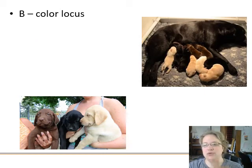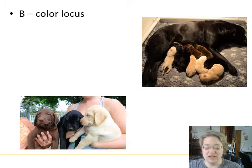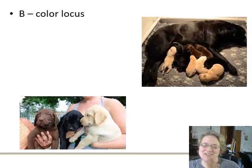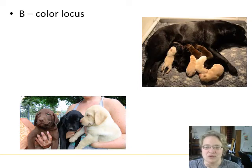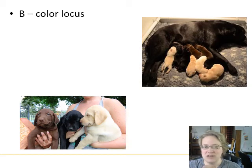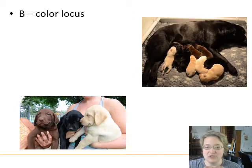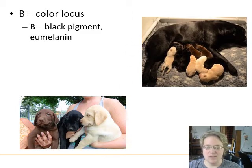Now we're going to get into a particular example we'll use a lot for homework and assignments — we're going to talk about Labrador dogs, because dogs are awesome and cute and we get to look at pictures of puppies. Labradors come in three main colors: yellow labs, chocolate labs, and black labs. One of the main genes in this system is called the B gene, which determines the color locus.